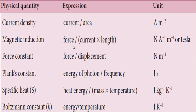Magnetic induction is force divided by current into length. Force is Newton, current is ampere, and length is meter, so the unit is Newton per ampere meter, written as N A⁻¹ m⁻¹. Another unit named after the scientist is Tesla. Force constant is force by displacement — Newton per meter. Planck's constant is energy of a photon by frequency. Energy is in joules and frequency is per second, so the unit is joule second.